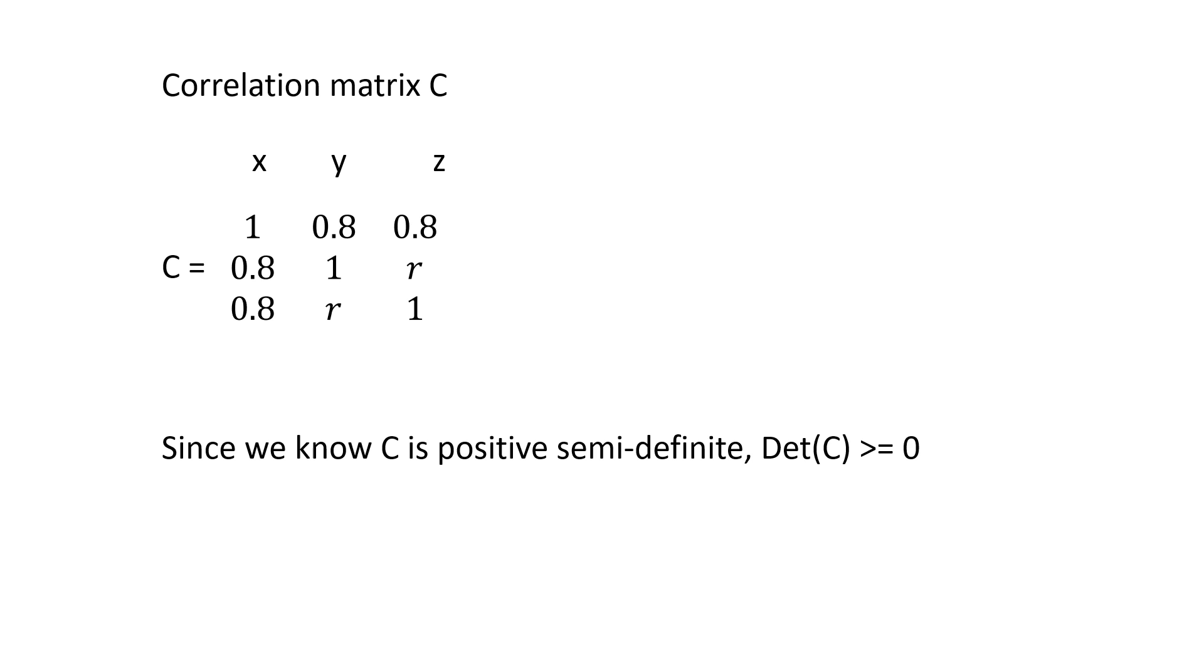Now we know that the correlation matrix is positive semi-definite and one of the properties of positive semi-definite matrix is that the determinant is greater than or equal to 0. So we'll use this property to find the range of r.